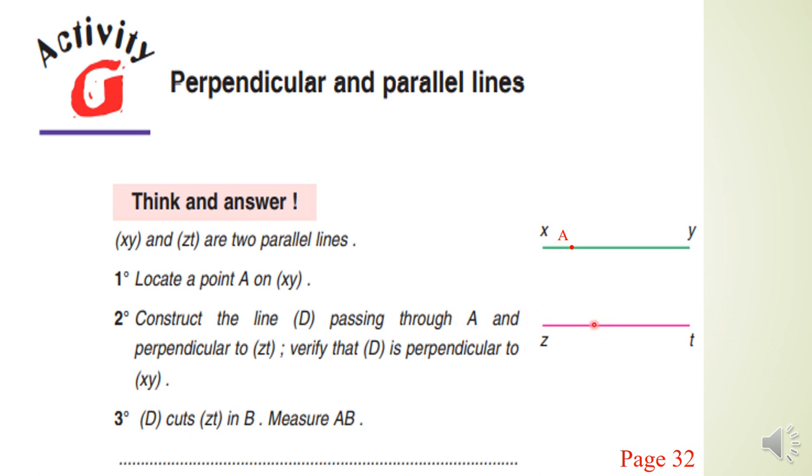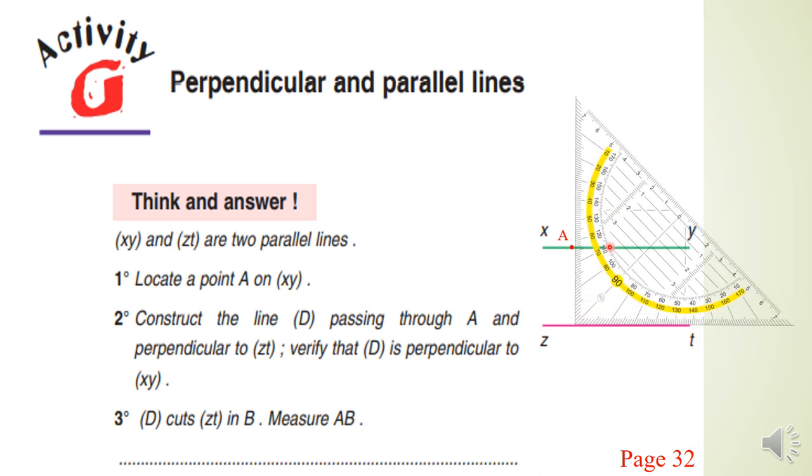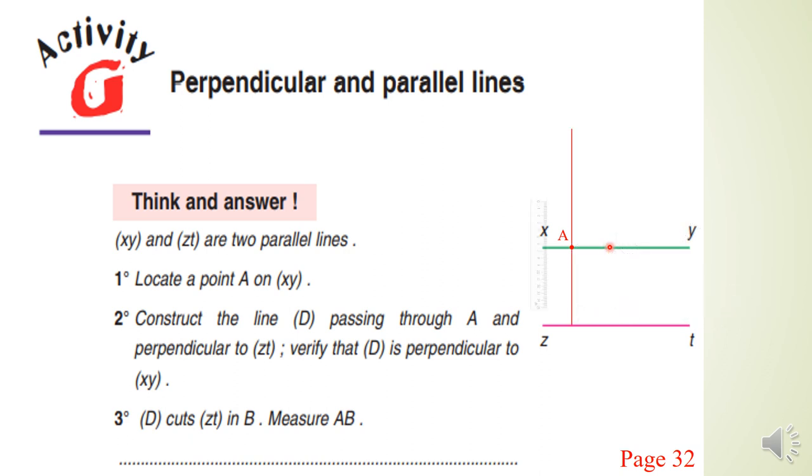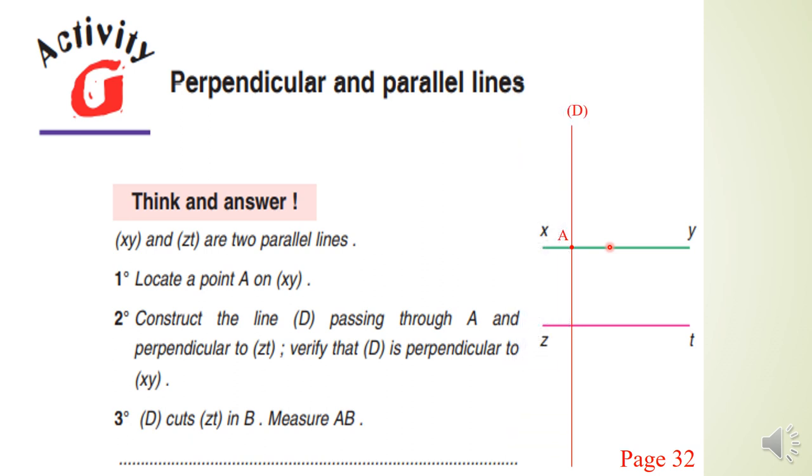Then we have to put the right angle and one side of the set square in front of the line (zt) and the second one in front of the point A like this. Now we have to draw the first part of the perpendicular line, then we elongate it. This line is the line (D) and it is perpendicular to (zt) by given.